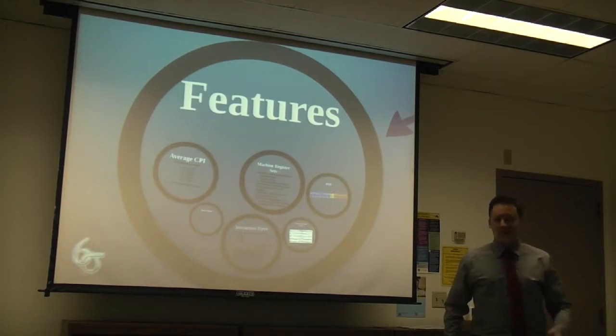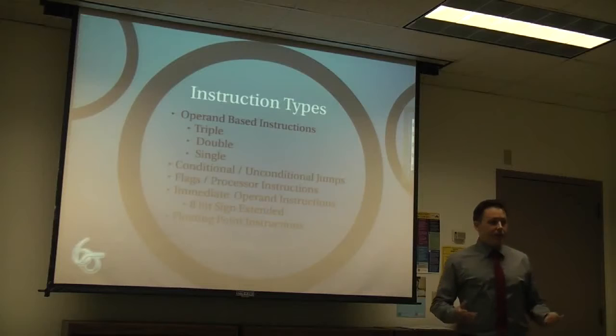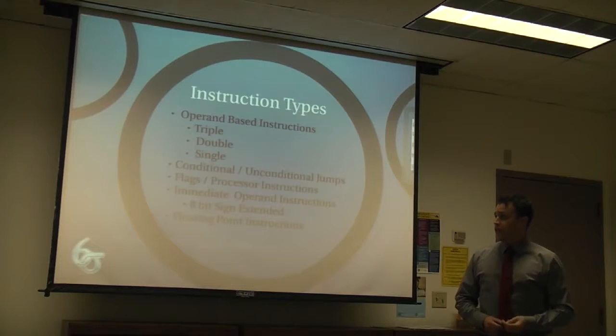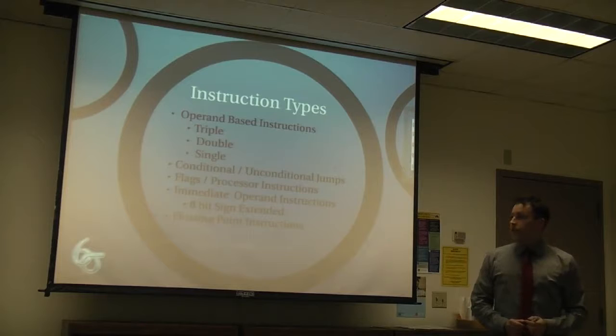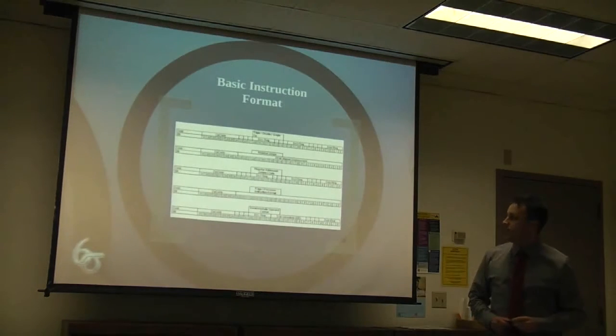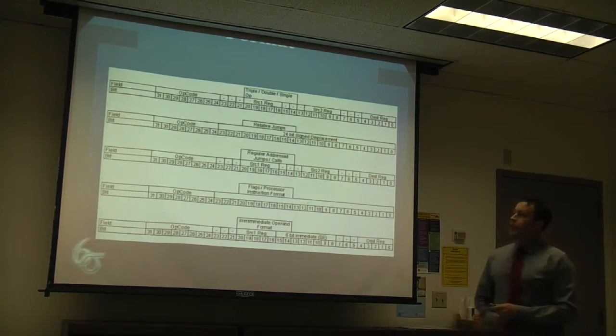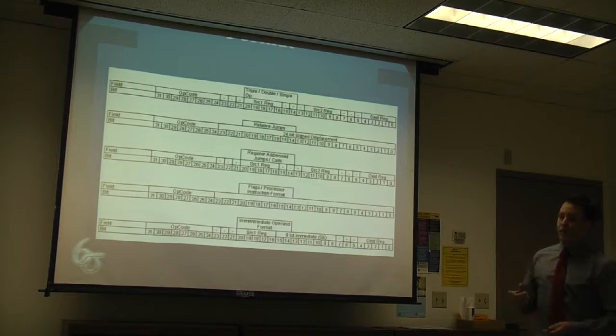Now we'll talk about some of the features we do have. Instruction types: We have basic instruction types that everybody here has. Triple, double, single base operands, conditional and unconditional jumps, flag processor instructions, immediate operand instructions, 8-bit sign-extended, and floating point instructions. The basic format of these instructions - we have our fields in the top row in each section. You can see they're labeled opcode, source1, source2, destination register. That covers triple, double, single, and floating point operations. Except that, of course, in the floating point it would be pointing to my registers.